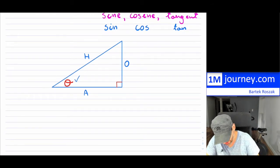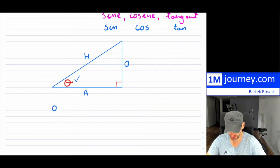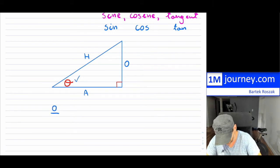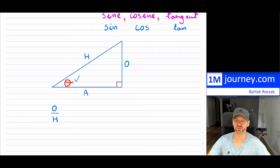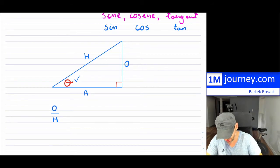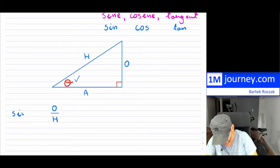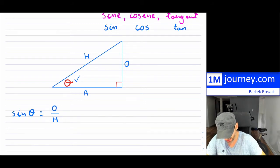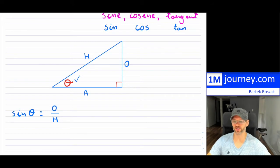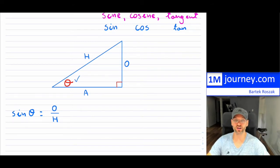If you take the opposite side — whatever the length of the opposite side is — and then you try to divide it by the hypotenuse, that particular ratio is going to give you a number. And it turns out that we define this as the sine of the angle that we have within our triangle. It is just simply the opposite over the hypotenuse. That's basically what sine is.